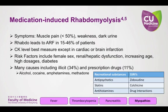Rhabdomyolysis is most commonly caused by physical injury, but medications can also be a very common cause. The major concern is that it can lead to acute renal failure in up to almost half of patients. Risk factors include female sex, renal or hepatic dysfunction leading to drug accumulation, increased age paralleling renal dysfunction, high dosages of medications, and diabetes. Rhabdomyolysis is very common with illicit substance use, and about 11% of cases are from prescription medications.